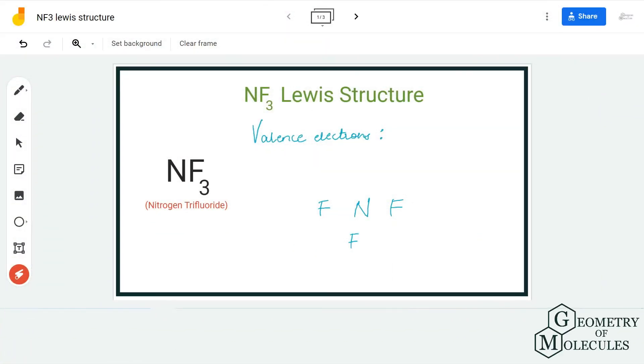Hi guys, welcome back to our channel. In today's video we are going to help you determine the Lewis structure for NF3 molecule. It's a chemical formula for nitrogen trifluoride, and to determine its Lewis structure we are first going to look at the valence electrons.